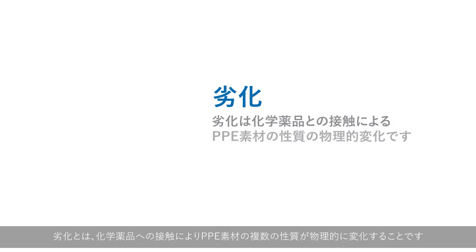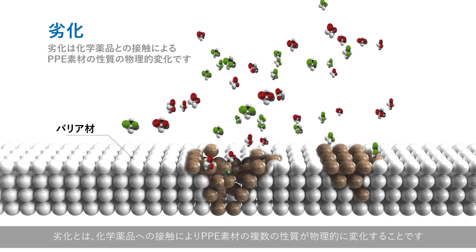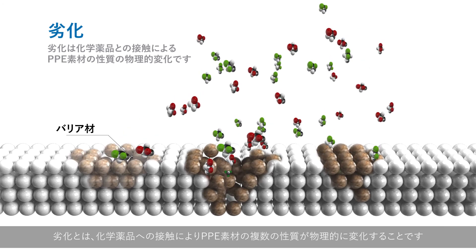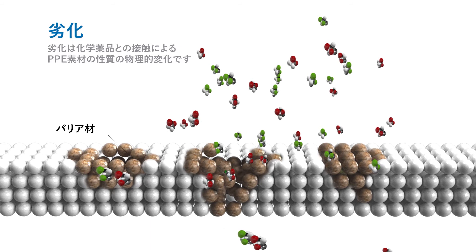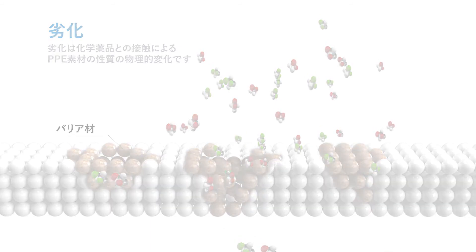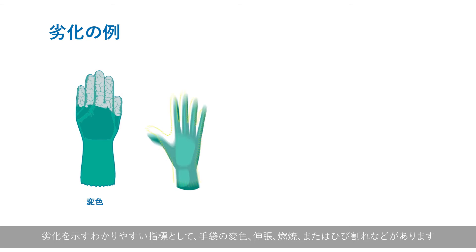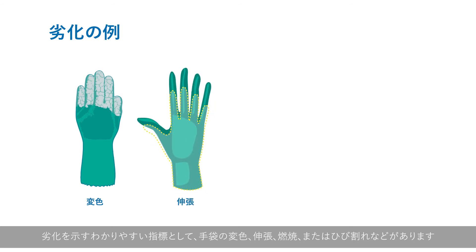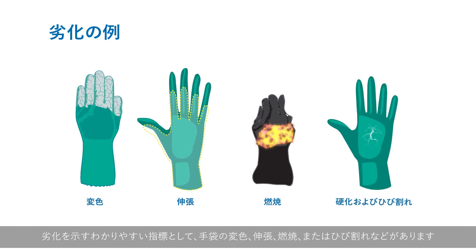Degradation is the physical change in one or more properties of the PPE material due to contact with a chemical. Obvious indicators include discoloration, elongation, and burned or cracked gloves.